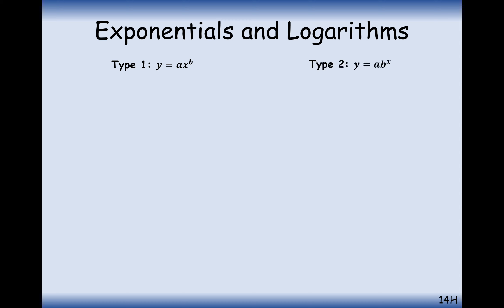We're going to use a logarithmic scale, which can turn a curved line into a straight line. There are two different types of equations we're going to look at. Type 1 is the polynomial type where we have y equals some number A times x to the power of B, where B is a power on the variable x. Type 2 is effectively an exponential type graph — for example, e to the x or 2 to the x — where the x variable is the one that's on the power, whereas in type 1 it's the number that's on the base being powered.